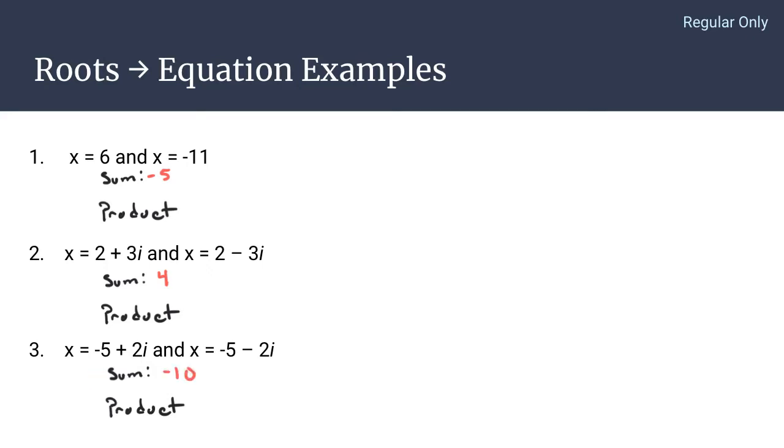Now, the product for each of these is going to take more work. You're going to have to use the generic rectangle for the second and third example. However, the product for the first example, since they are just real roots, 6 times negative 11 is negative 66. So let's focus more on examples 2 and 3 using our generic rectangle.